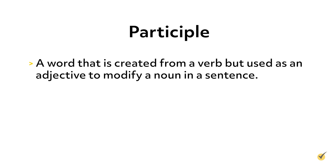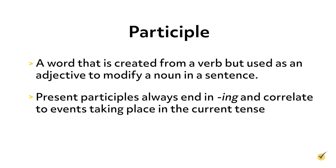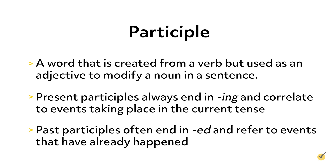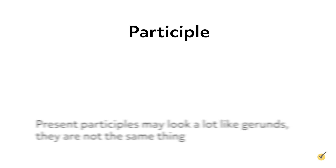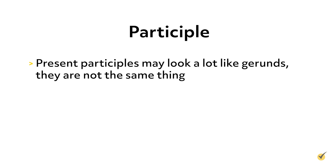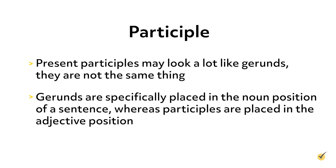Gerunds are often confused with our next type of verbal: participles. A participle is a word that is created from a verb but used as an adjective to modify a noun in a sentence. Present participles always end in -ing and correlate to events taking place in the current tense. Past participles often end in -ed and refer to events that have already happened. Though present participles may look a lot like gerunds, they're not the same thing — gerunds are specifically placed in the noun position, whereas participles are placed in the adjective position.